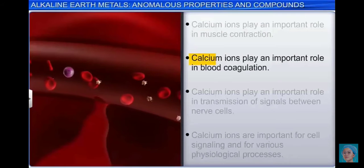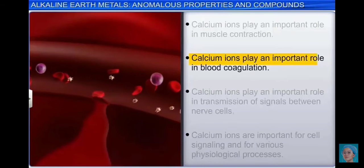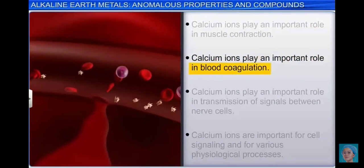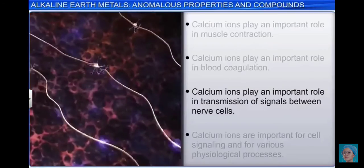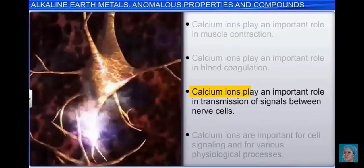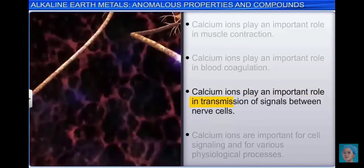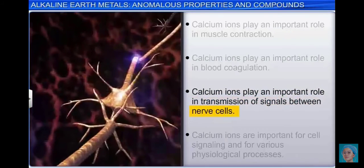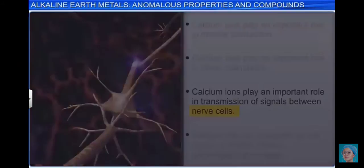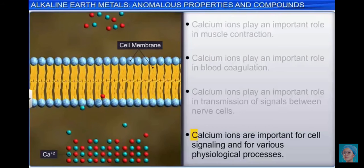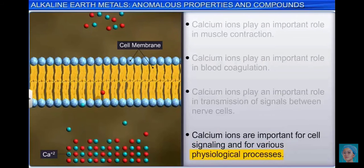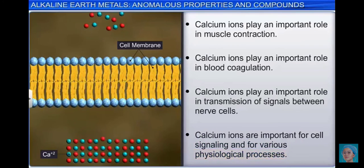Calcium ions also play an important role in blood coagulation, and are essential for the transmission of signals between nerve cells. Calcium ions are important for cell signaling and for various physiological processes. Calcium channels regulate the transportation of calcium ions across cell membranes.